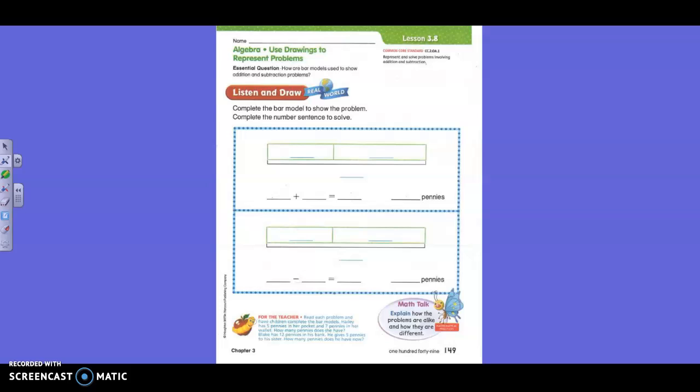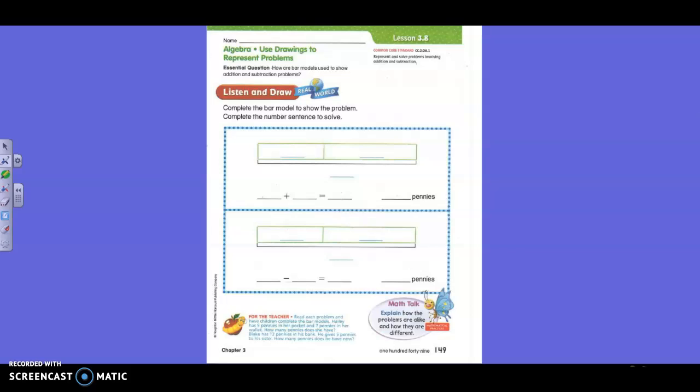Here is our story for today. We're going to use this in the first bar model to show the problem, and then we will write the number sentence to solve the problem. I'm going to say a name. Haley has five pennies in her pocket and seven pennies in her wallet. How many pennies does she have? Haley has five pennies in her pocket. Where do you think that number is going to go?